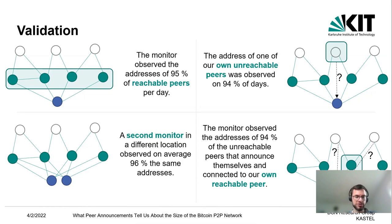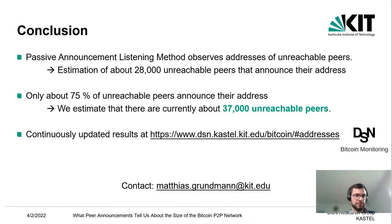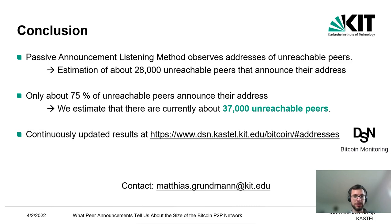To summarize, our validation shows the method works quite well to detect unreachable peers. We have presented the passive announcement listening method and used it to estimate that currently there are about 28,000 unreachable peers that announce their addresses. However, not every unreachable peer announces its address — peers explicitly configured to be unreachable or running a different client implementation may not. We observed at our reachable peers that only about 75% of unreachable peers announce their address, so we estimate the total number of unreachable peers, including those that do not announce, is around 37,000.